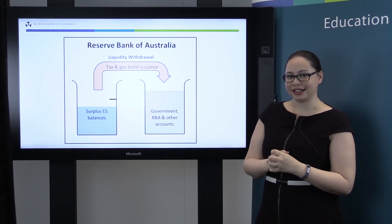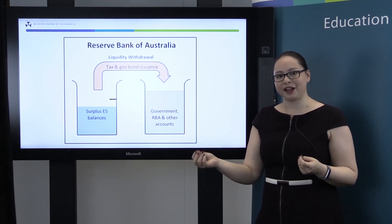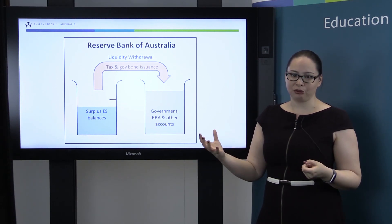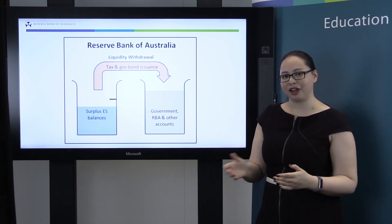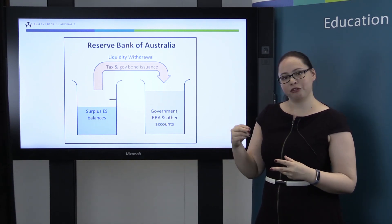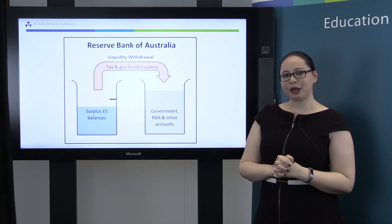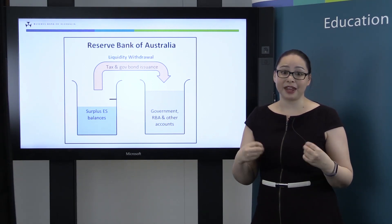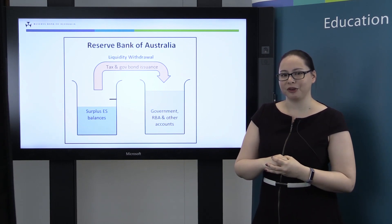The reverse works exactly the same way. A transaction which goes from surplus ES balances to one of these government or other accounts will decrease the total amount of surplus ES balances in the market and hence decrease the supply of liquidity. Because liquidity is being removed from the market, we would call this a liquidity withdrawal. An example of a liquidity withdrawal would be when individuals or companies pay tax to the government — this removes the supply of liquidity from the market.